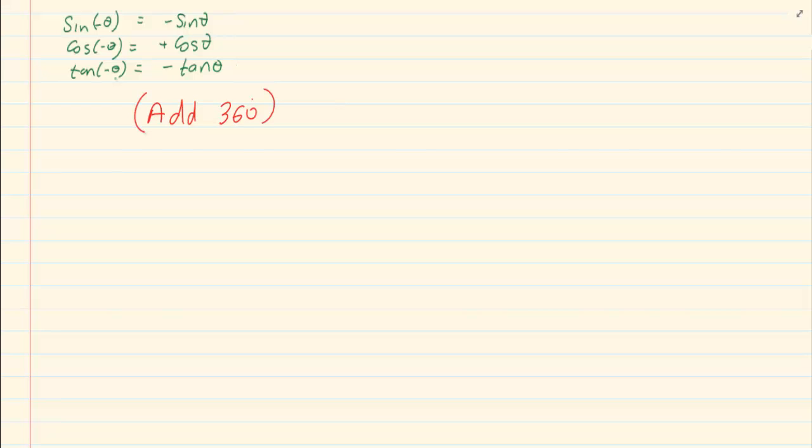So if I give you sin negative 45 degrees, simply add a 360 degrees. So what do I have? I have sin 360 minus 45. Do a reduction. It's in the fourth quadrant. So it's negative. Because I am using 360, the ratio stays the same, 45.